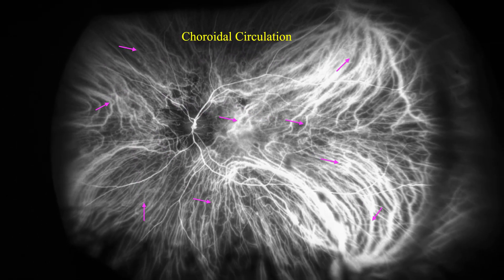On the other hand, the choroidal circulation is much greater. As you can see in the image, the choroid has a large number of blood vessels.